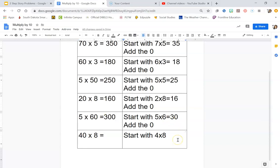And the last one here, 40 times 8. You're going to drop the 0 and start with 4 times 8, and you should get 32. Then you want to add the 0 back on, and you should end up with 320.